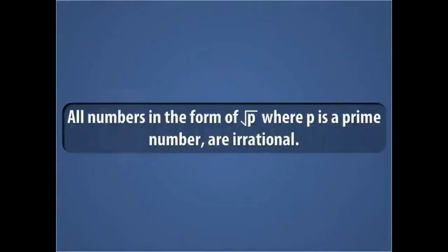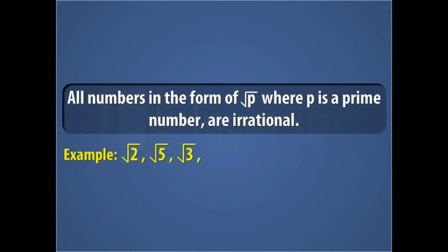All numbers in the form of square root of p, where p is a prime number, are irrational. Some examples are square root of 2, square root of 5, and square root of 3.